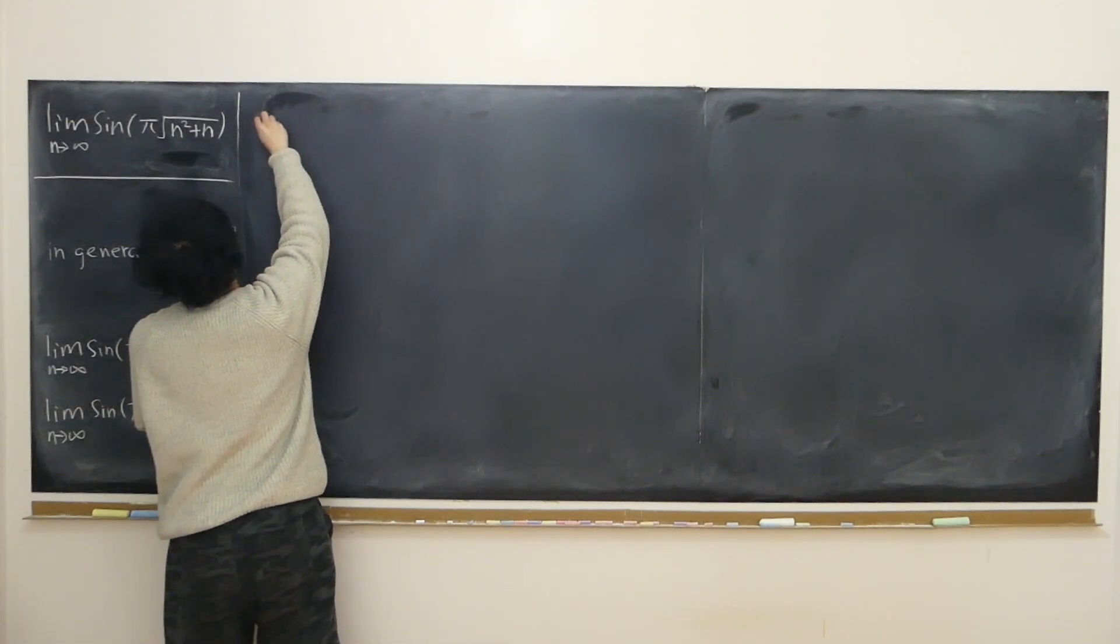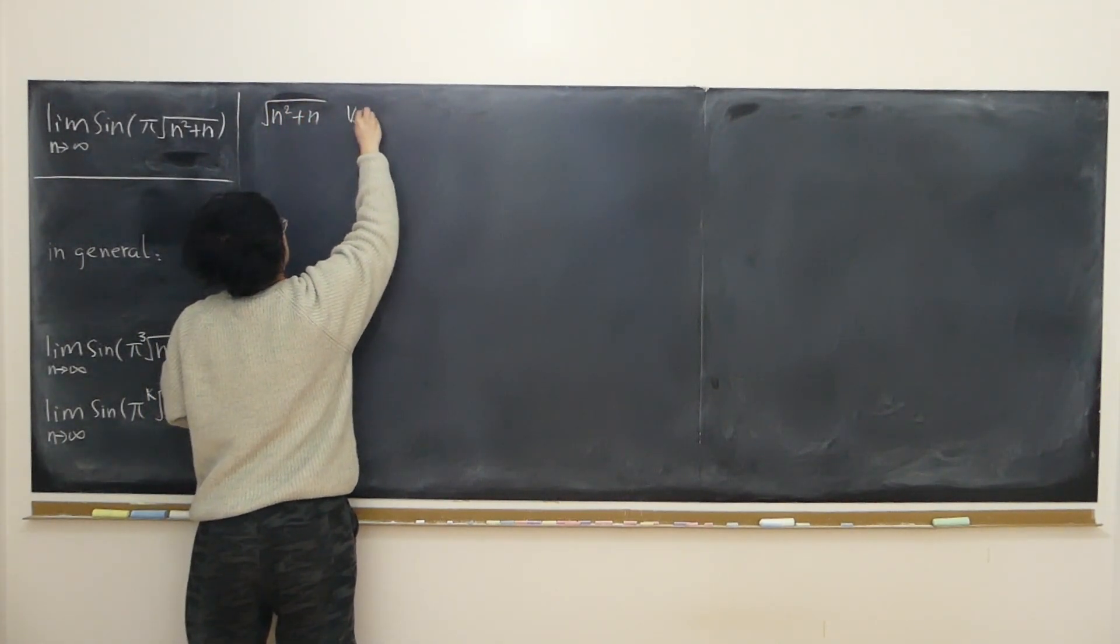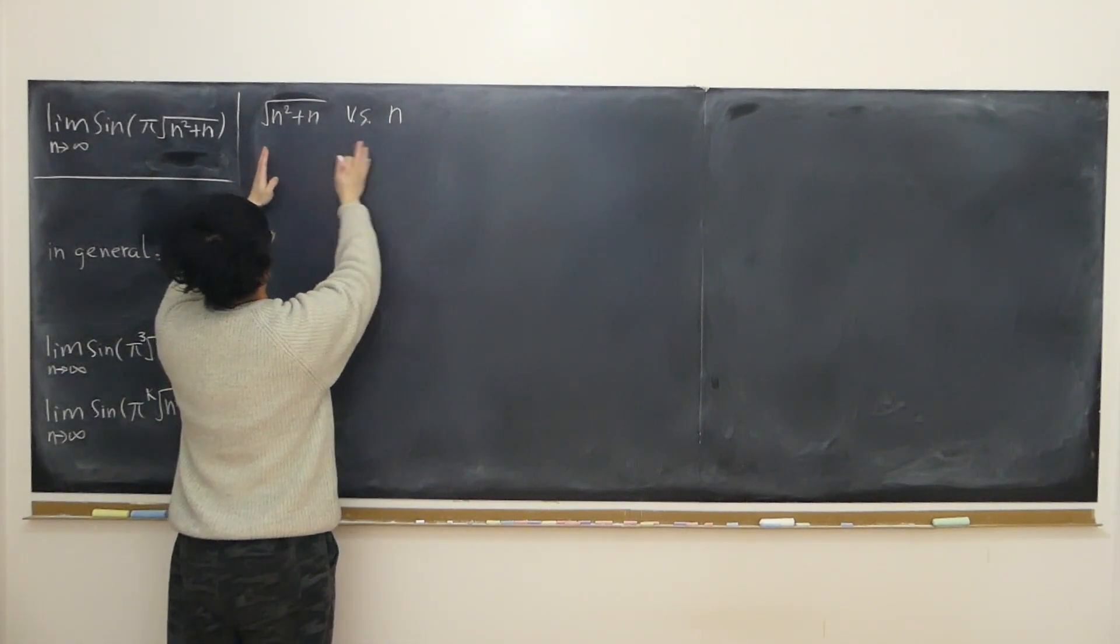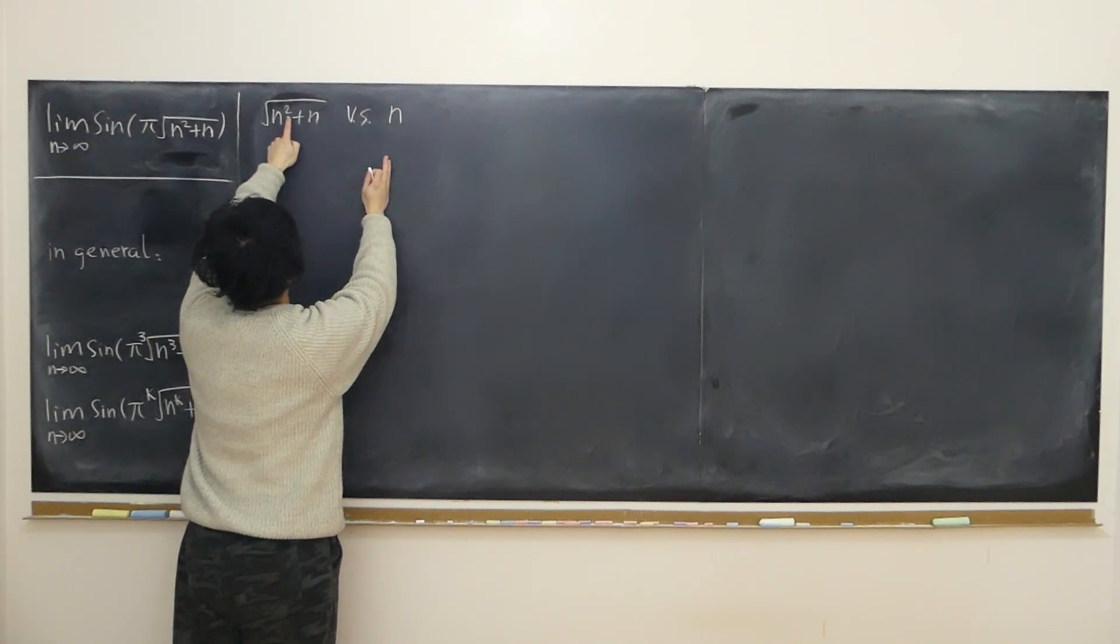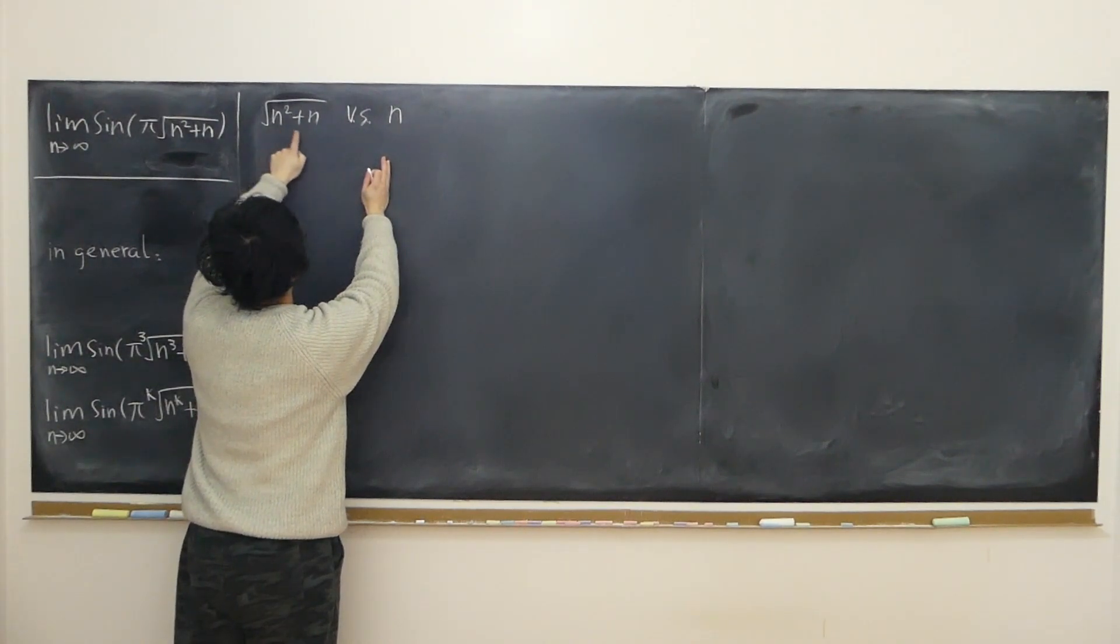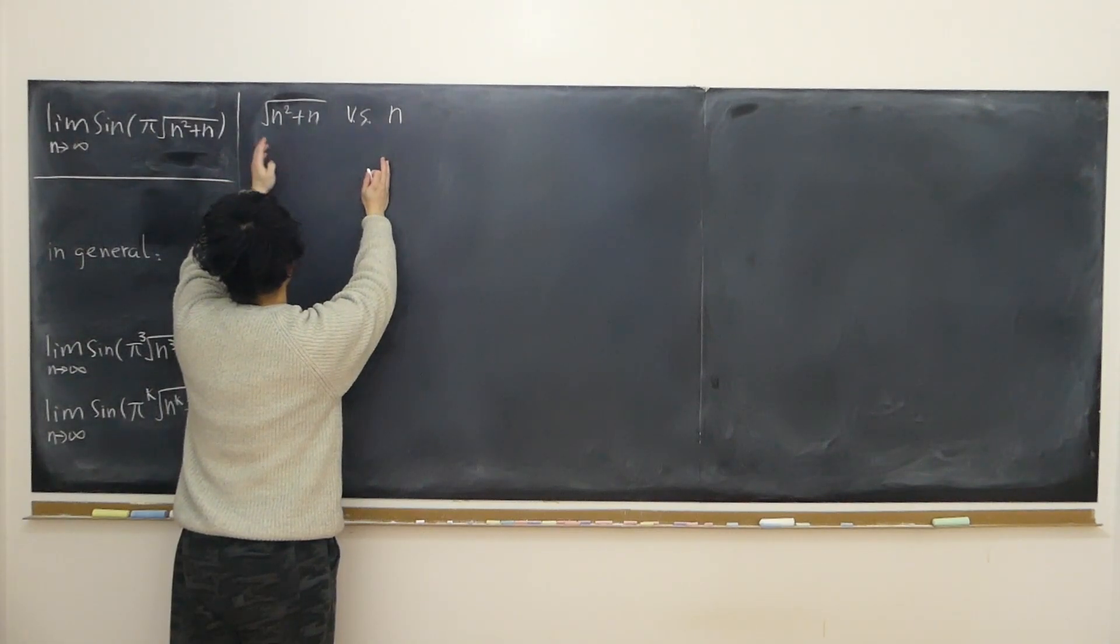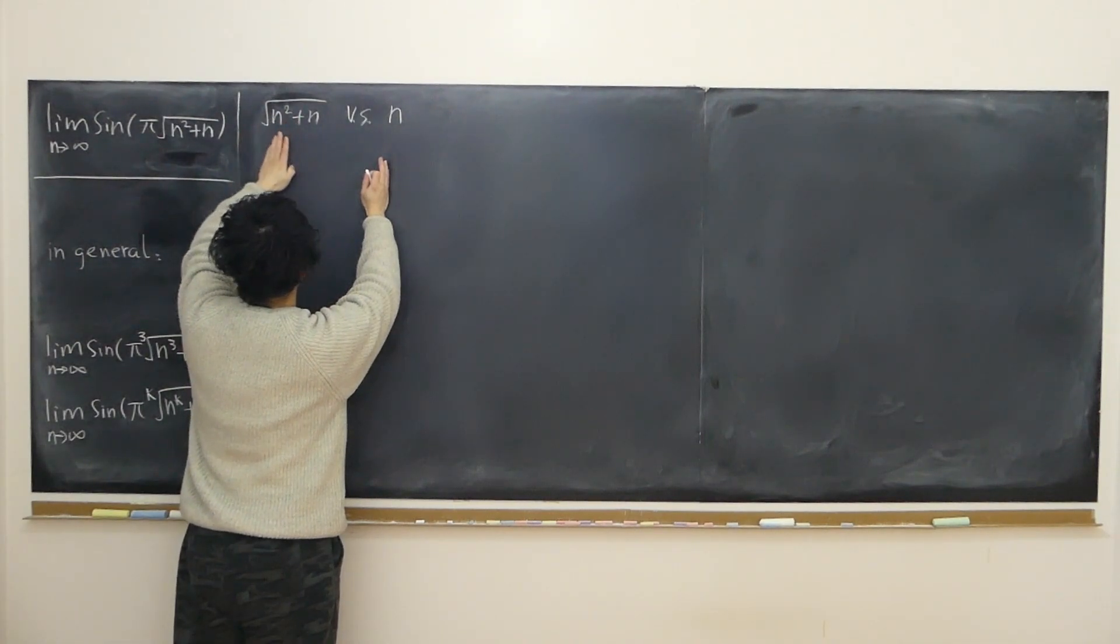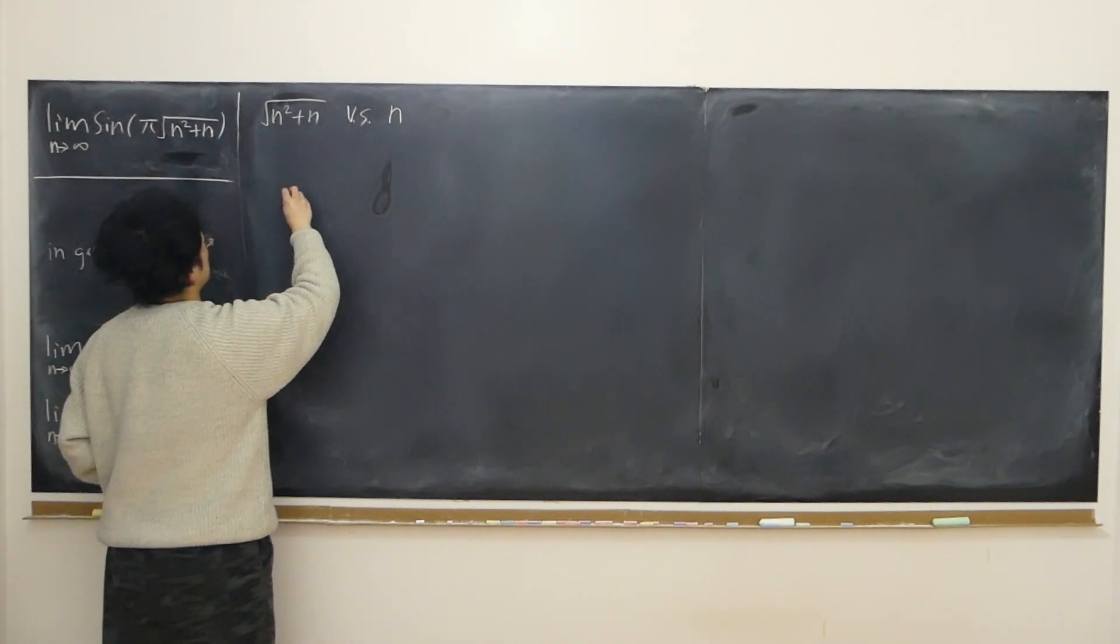We have this feeling that they may approach infinity at the same speed because the leading term, the dominating degree, is just 2 inside the polynomial. Outside we have the square root, so our guess is the dominating impact is just n. That's why we come up with this initial thought.